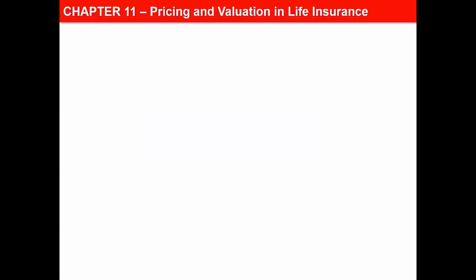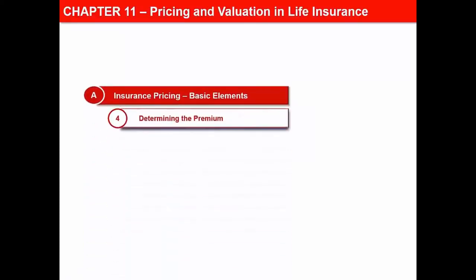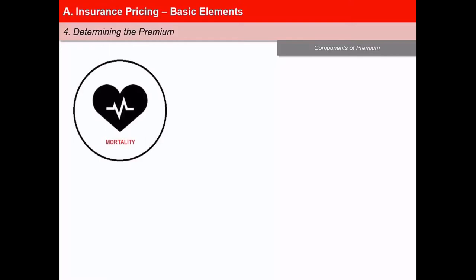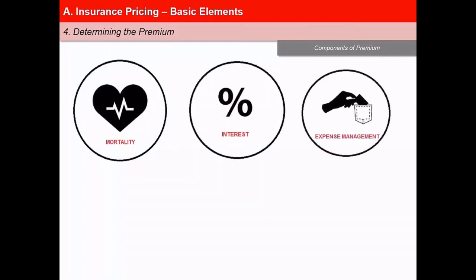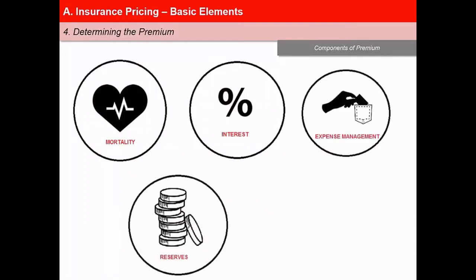In this next video of the lesson, Pricing and Valuation in Life Insurance, we will learn how to determine the premium. Let us now examine how life insurers arrive at the rates presented in the premium tables. The process of setting the premium considers the following elements: mortality, interest, expenses of management, reserves, and bonus loading.